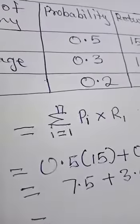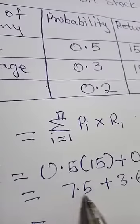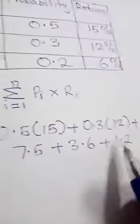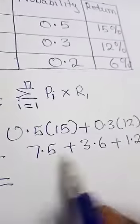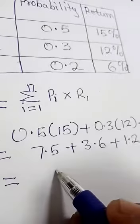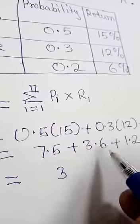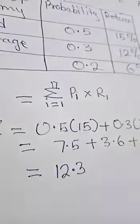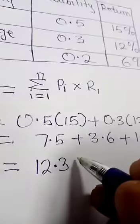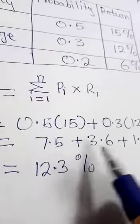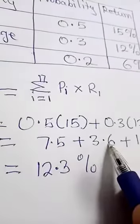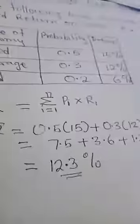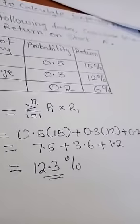Therefore, the final answer is what? 7.5 plus 3.6 plus 1.2 equals 12.3%. This is the simple way to calculate expected return.